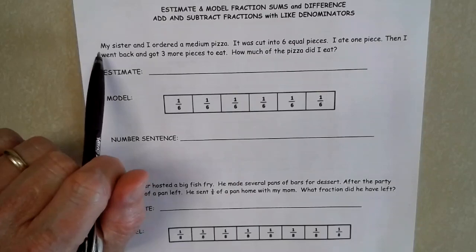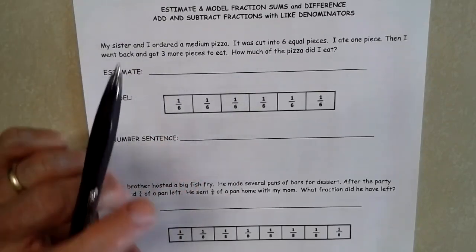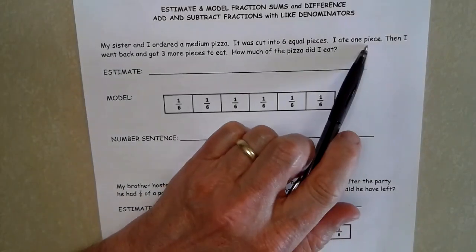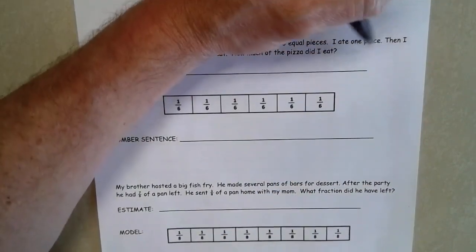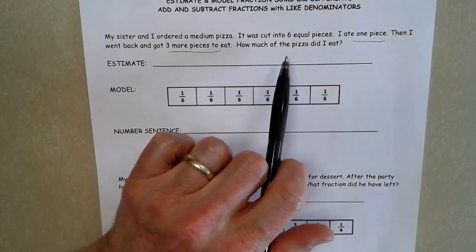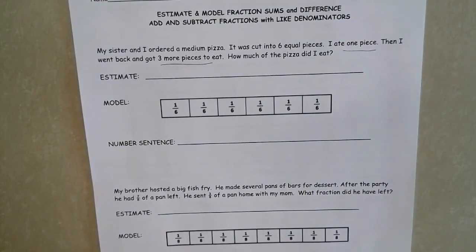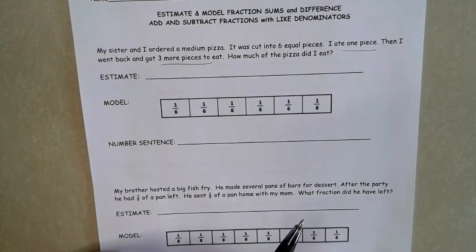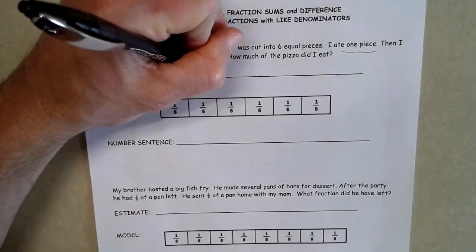If I'm looking at the first question here, it says, my sister and I ordered a medium pizza. It was cut into six equal pieces. I ate one piece and then went back and got three more pieces to eat. I'm going to underline some of this important information here. How much of the pizza did I eat? So when I'm looking at this, fifth graders, I looked at one piece and then I ate an additional three pieces. So I'm looking at that this is going to be an addition problem.